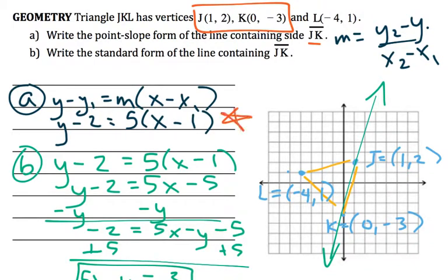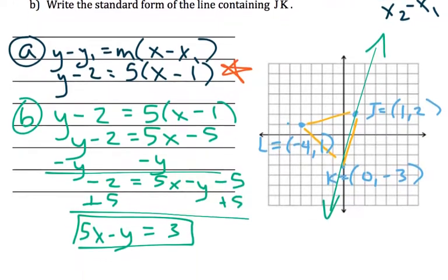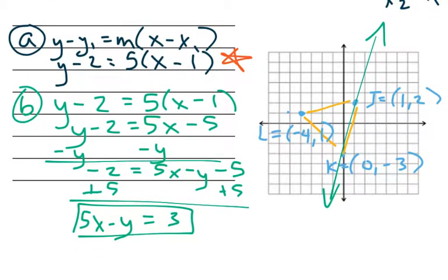It's totally fine if your answer doesn't look the exact same in A and that's because I chose the point 1, 2 which was J, so if you chose K you would get something different. If you chose L that would be a mistake because L is not on this line. But in B after you take what you got in A and worked your way towards standard form you should get the same thing. And the reason you would get the same thing is because in standard form there are rules that you have to stick with.